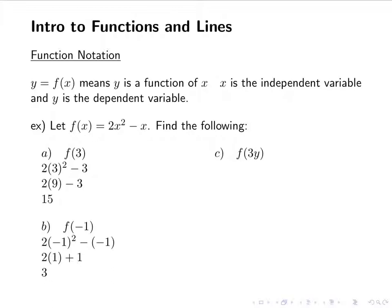c, f of 3y, 2 times 3y squared minus 3y. 3y squared is 9y squared. Remember to square the 3, square the y. Then we get 18y squared minus 3y. That's the best we can do. If we wanted, we could factor it. We could have 3y times 6y minus 1. But that's really all we could do. We can't combine them. They're not like terms.